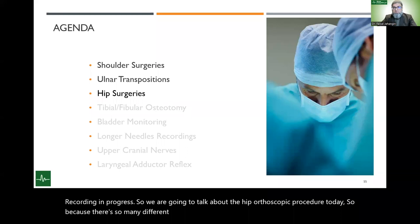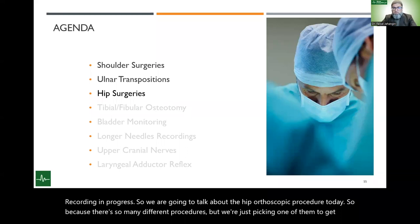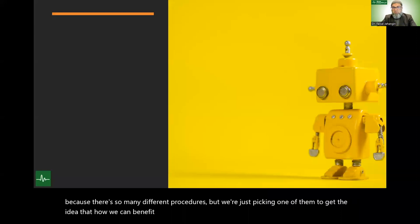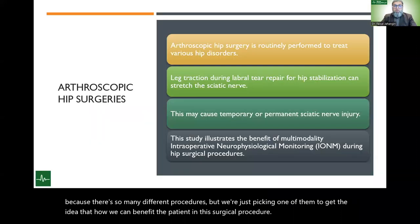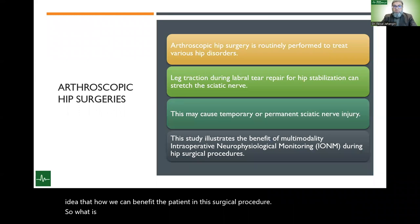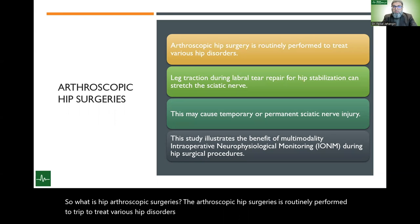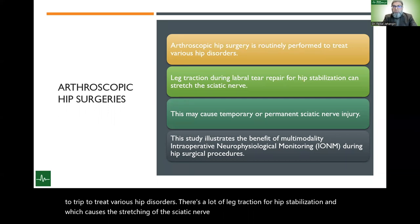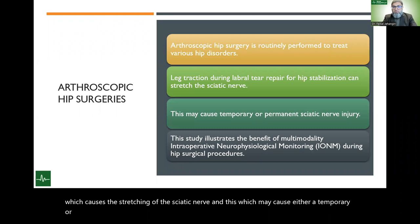We are focusing on hip arthroscopic procedures today — picking one procedure to illustrate how neuromonitoring can benefit the patient. Hip arthroscopy is routinely performed to treat various hip disorders. There is significant leg traction for hip stabilization, which causes stretching of the sciatic nerve and may cause either temporary or permanent sciatic nerve injury. If permanent, it may cause weakness of the limb or foot drop.